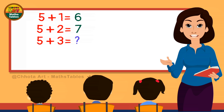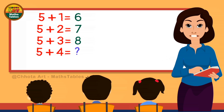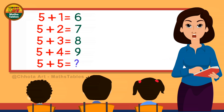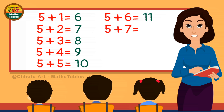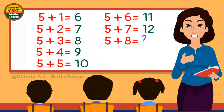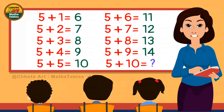5 plus 3 is 8. 5 plus 4 is 9. 5 plus 5 is 10. 5 plus 6 is 11. 5 plus 7 is 12. 5 plus 8 is 13. 5 plus 9 is 14. 5 plus 10 is 15.